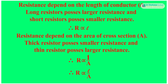Resistance also depends on the area of cross section. Thick resistors possess smaller resistance and thin resistors possess larger resistance. Therefore, R is directly proportional to 1 by A, and combining both, R is directly proportional to L by A.